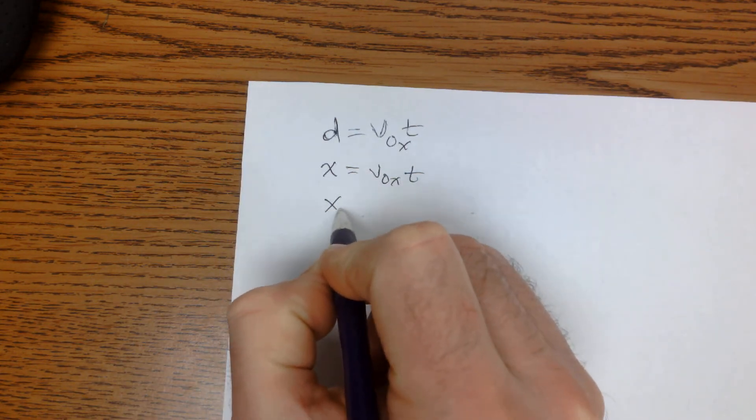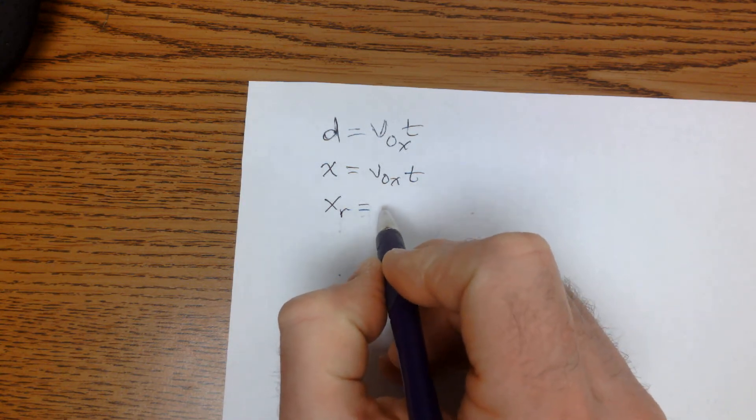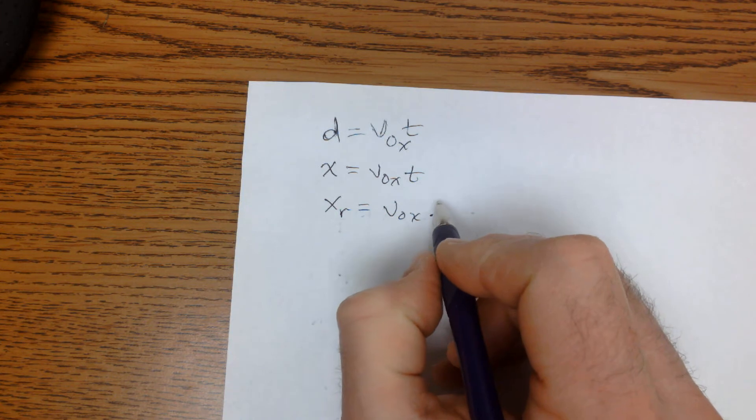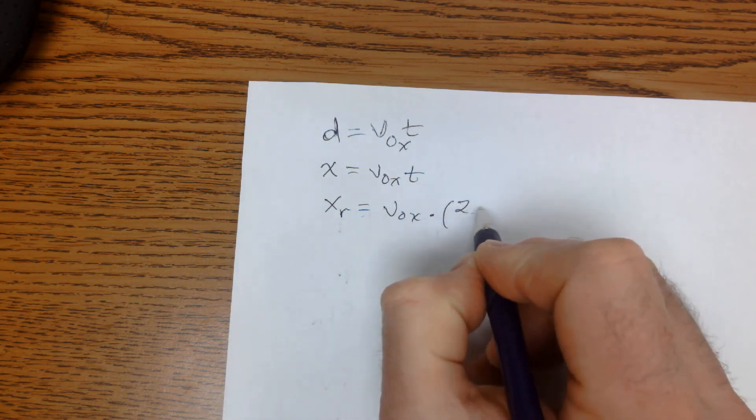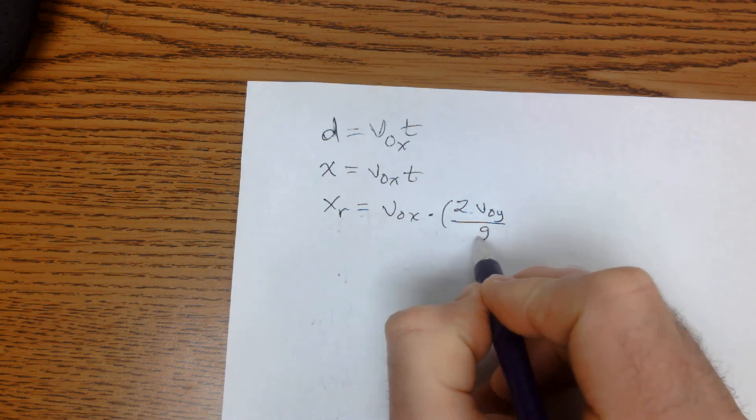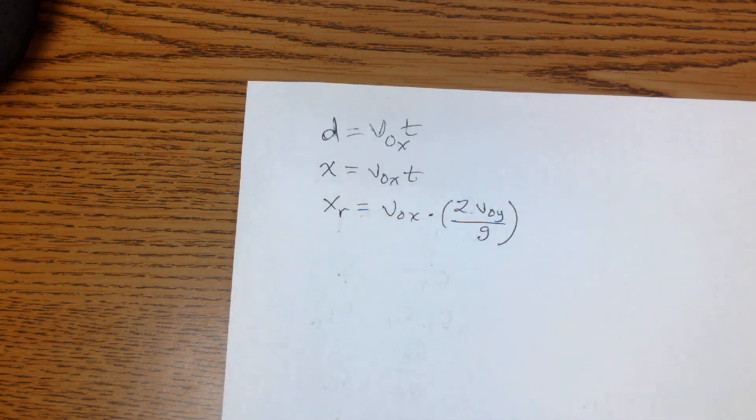So the range in the x direction is the initial velocity in the x direction times 2 times v0y over g. Simple enough, right?